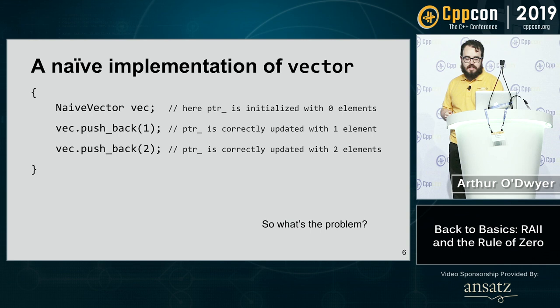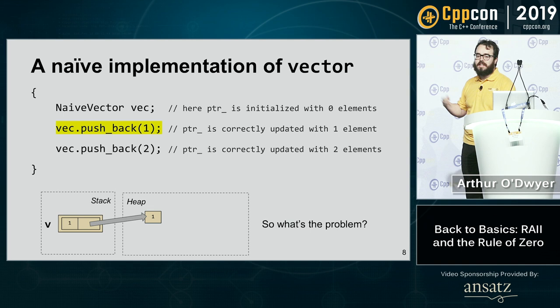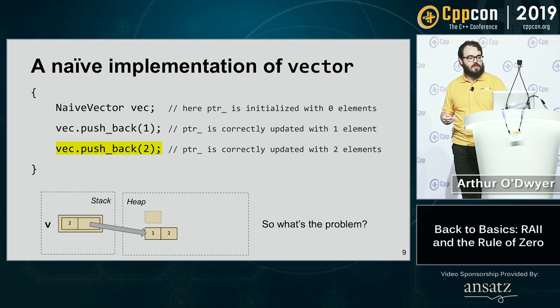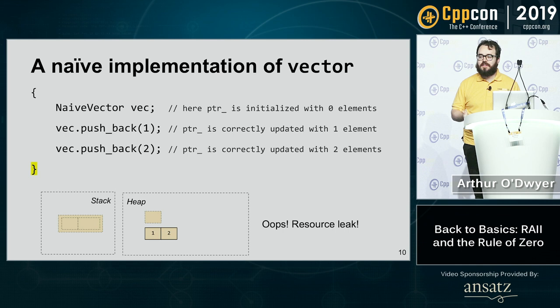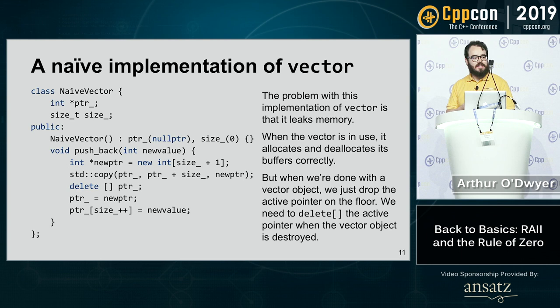When we hit the closing curly brace, the vector is destroyed. There is no special thing the compiler does to clean up that int pointer, because we didn't tell it what to do. The problem is that naive vector leaks memory — not while it is in use, but when we're done with it. We drop the active pointer on the floor. We need to somehow delete the active pointer when the vector object is destroyed.